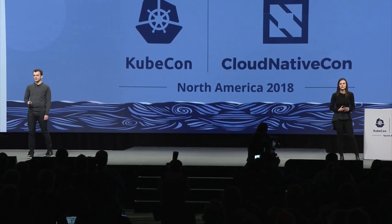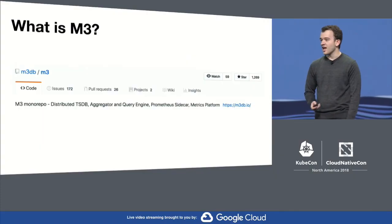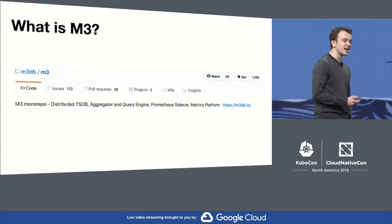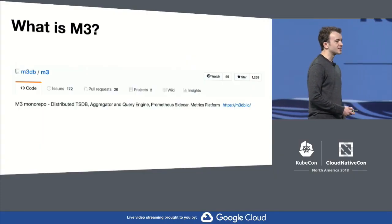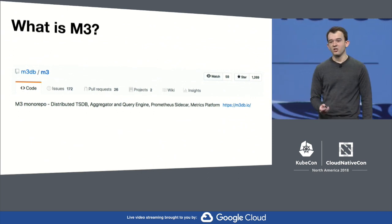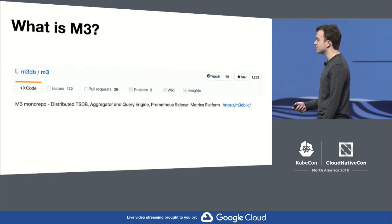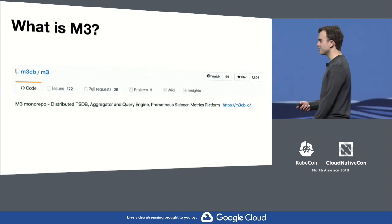M3DB is part of M3, which is Uber's open source metric stack. M3 has been in production at Uber since 2016 and we've built it in the open since day one. M3DB is the distributed time series database that sits at the core of M3, alongside our other components like our fault-tolerant aggregation tier and distributed query engine.